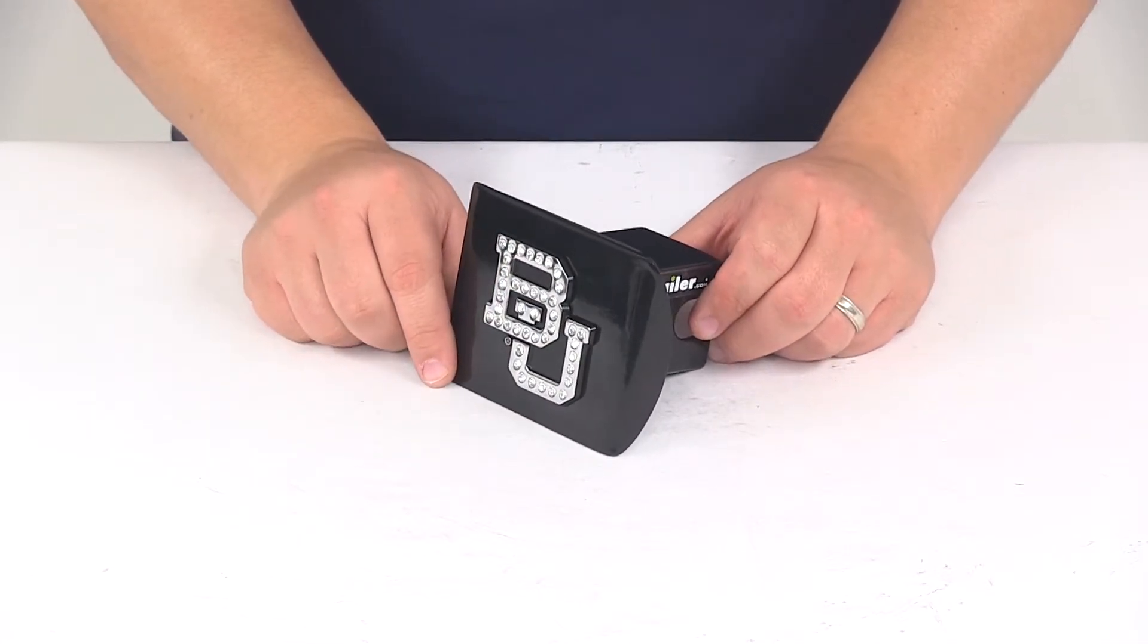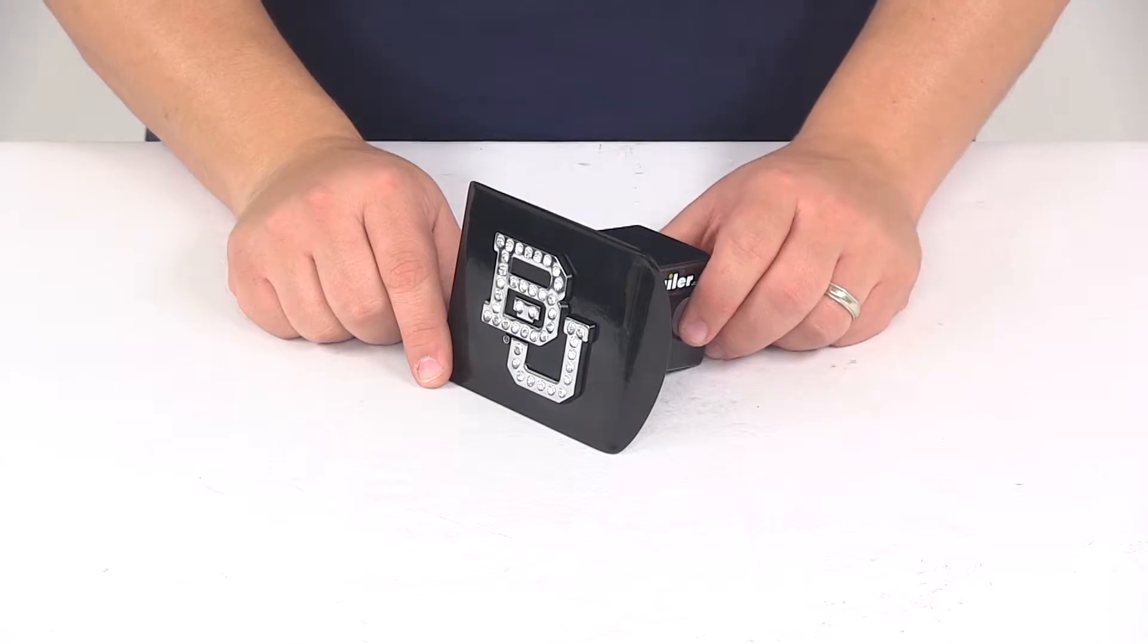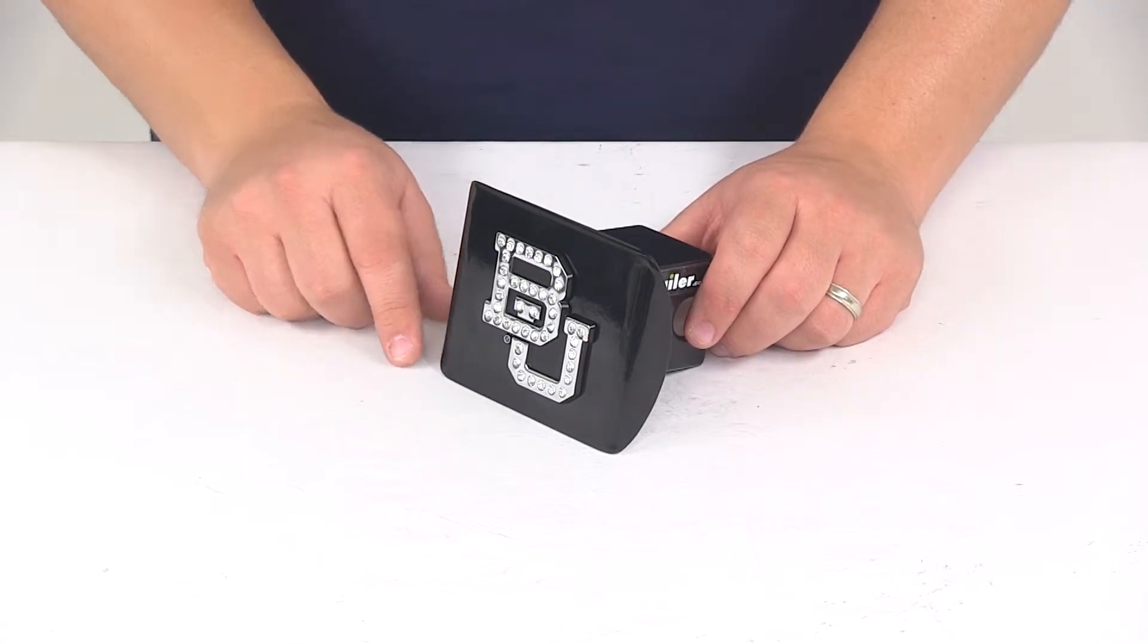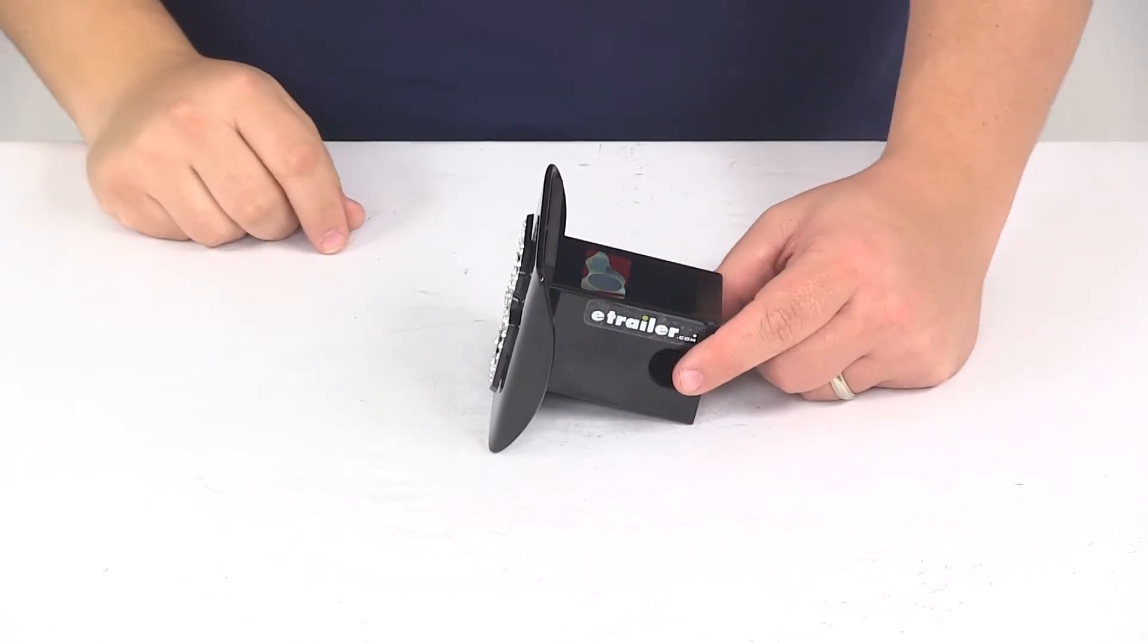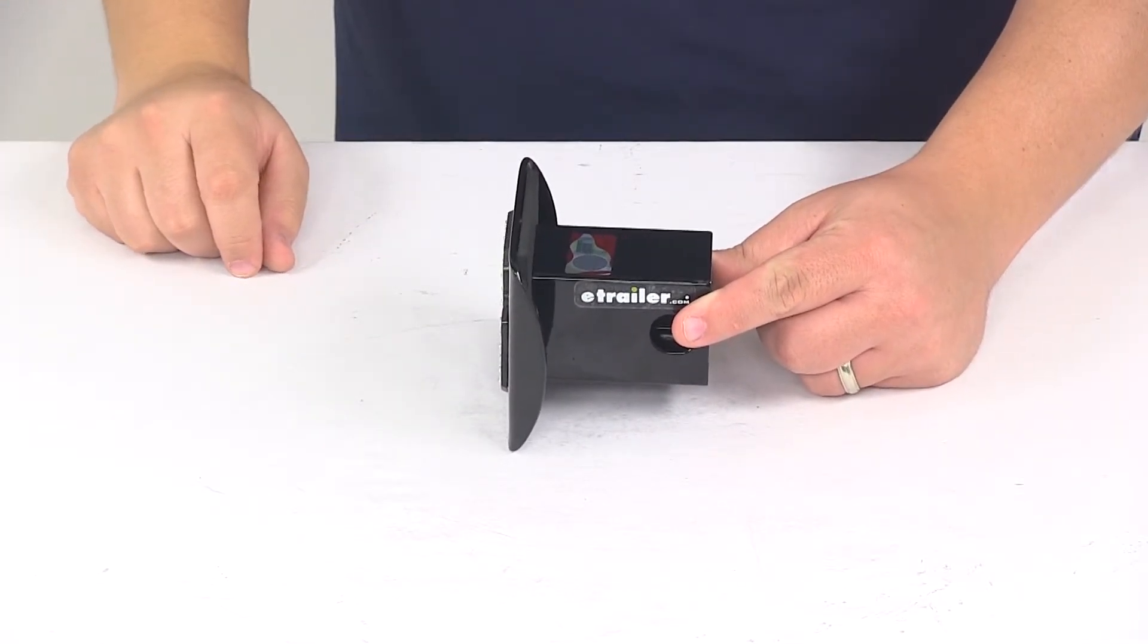The hitch cover requires a hitch pin and clip or a hitch lock to get it secured and installed into the hitch. Those items are sold separately, so if you're interested in one you can find them right here at eTrailer.com. The pinhole on this unit accepts a standard 5/8 inch diameter pin.